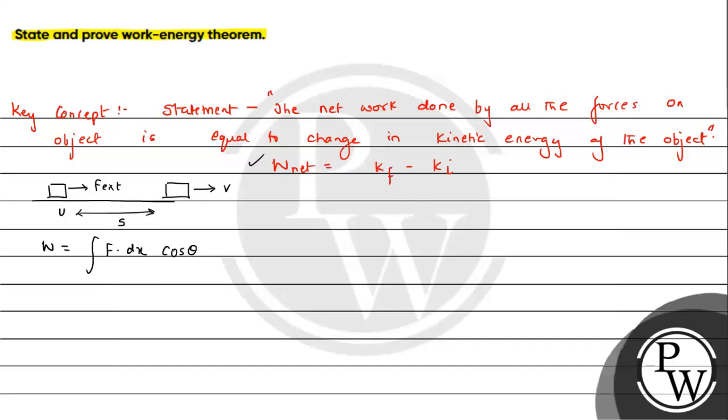Displacement is also towards right and force is also towards right. So angle between them is 0. So cos0 will be 1. So we can write F. If, let's say, mass M is the mass of the block, we can write MA dx. Right?